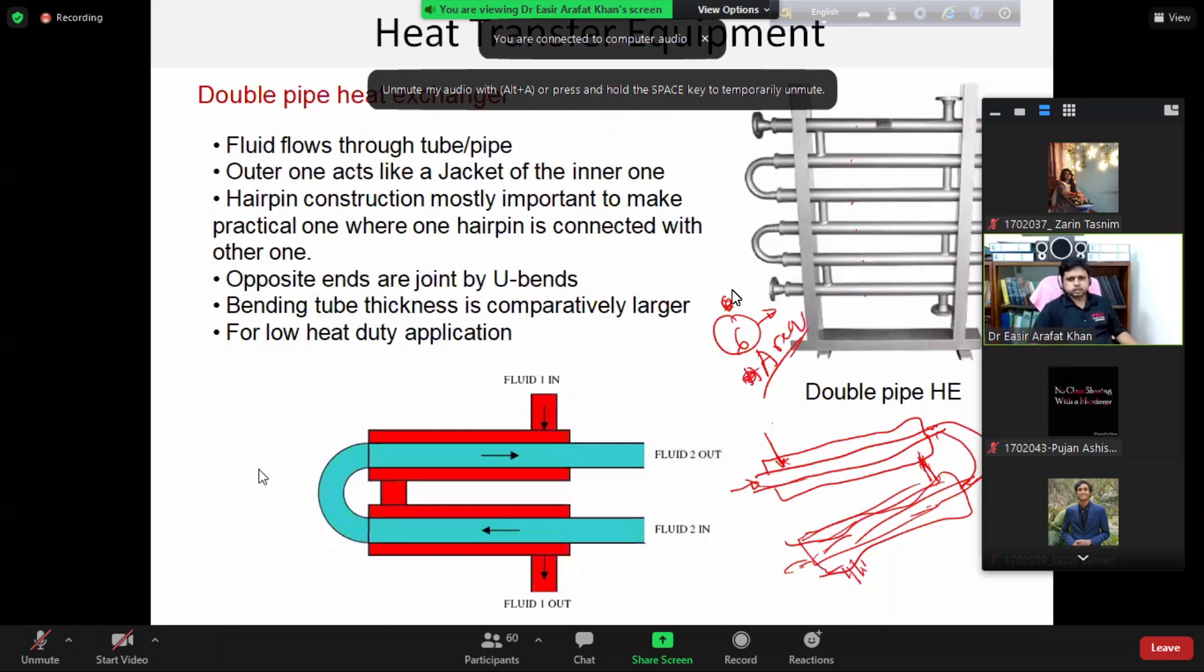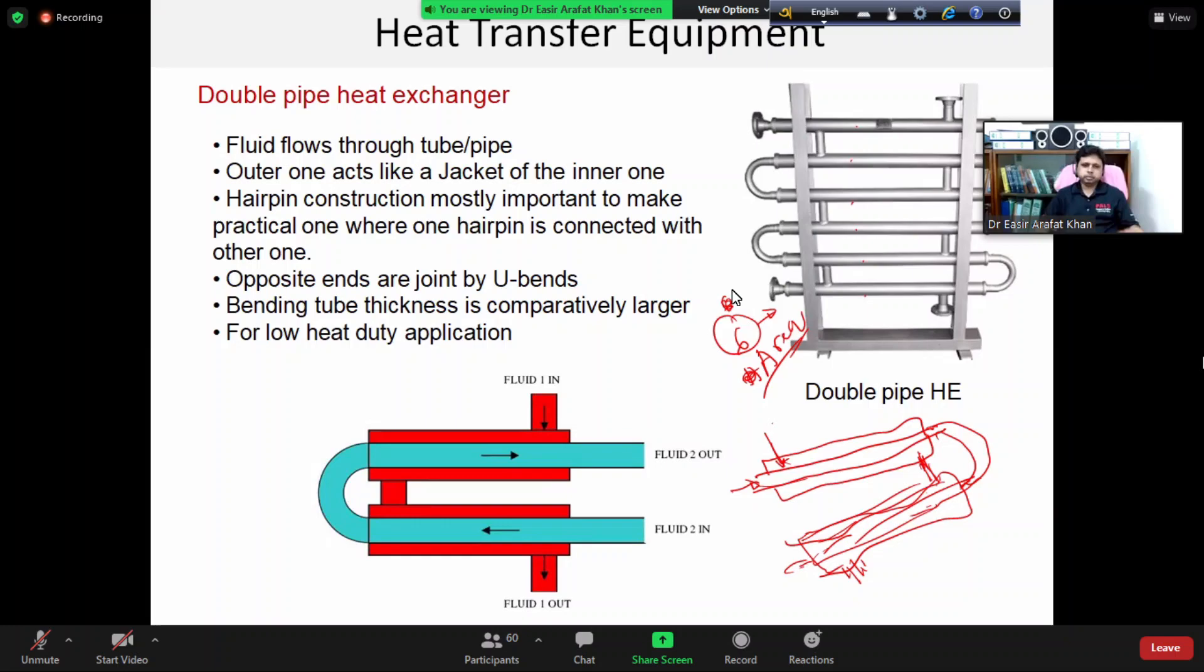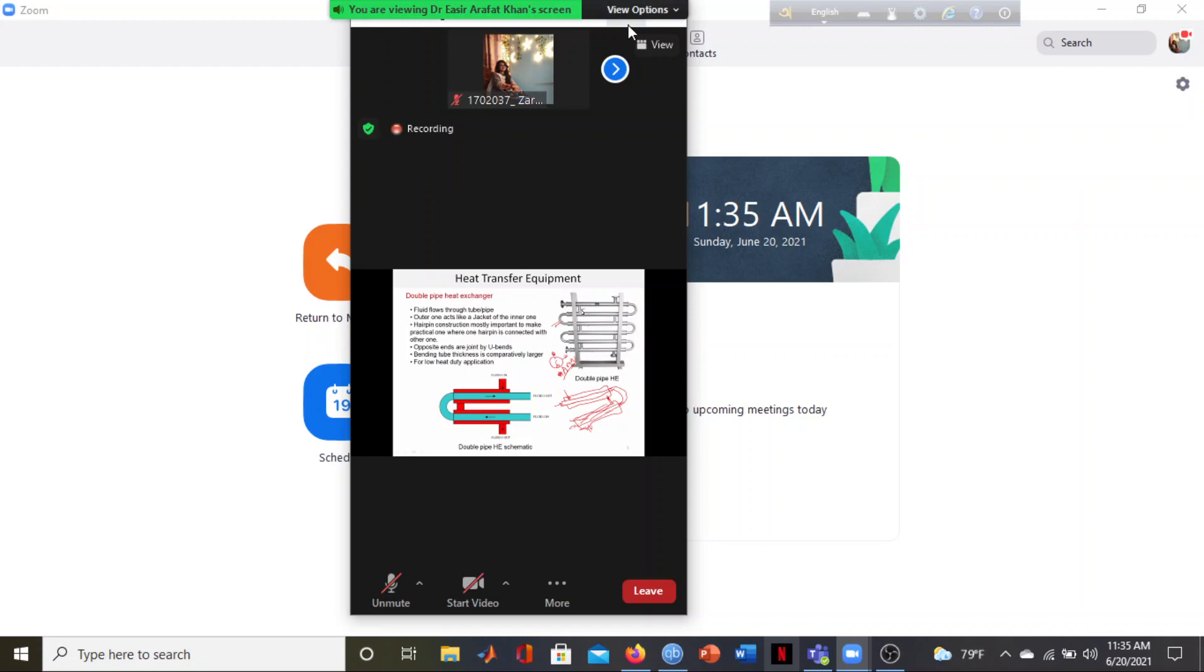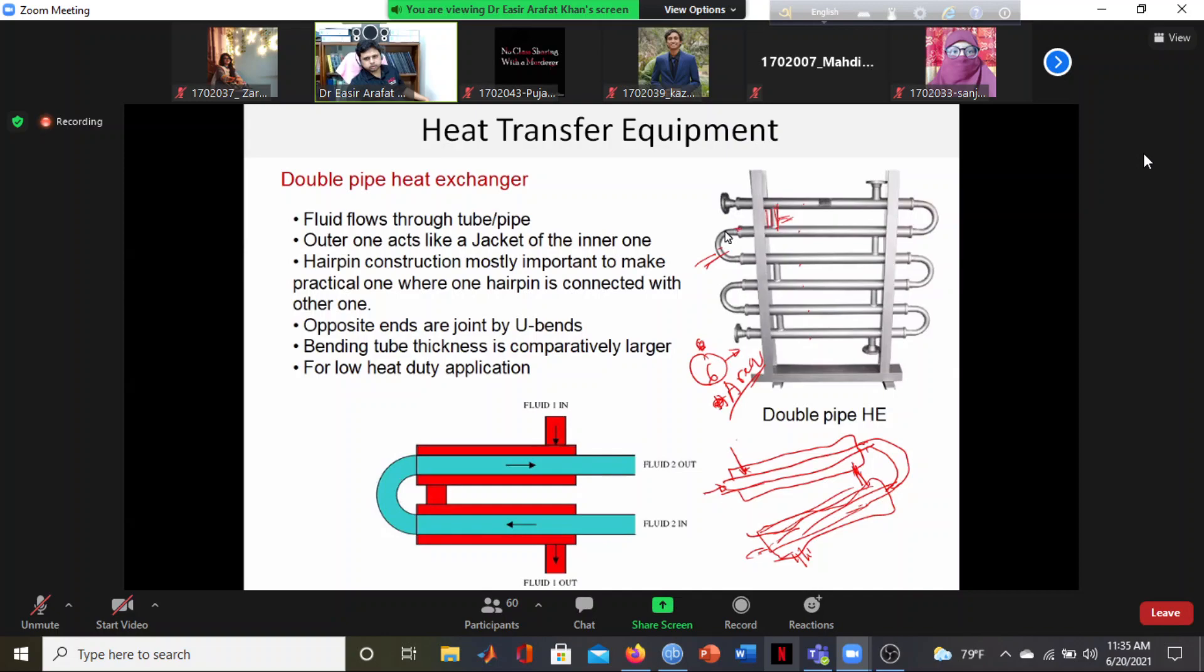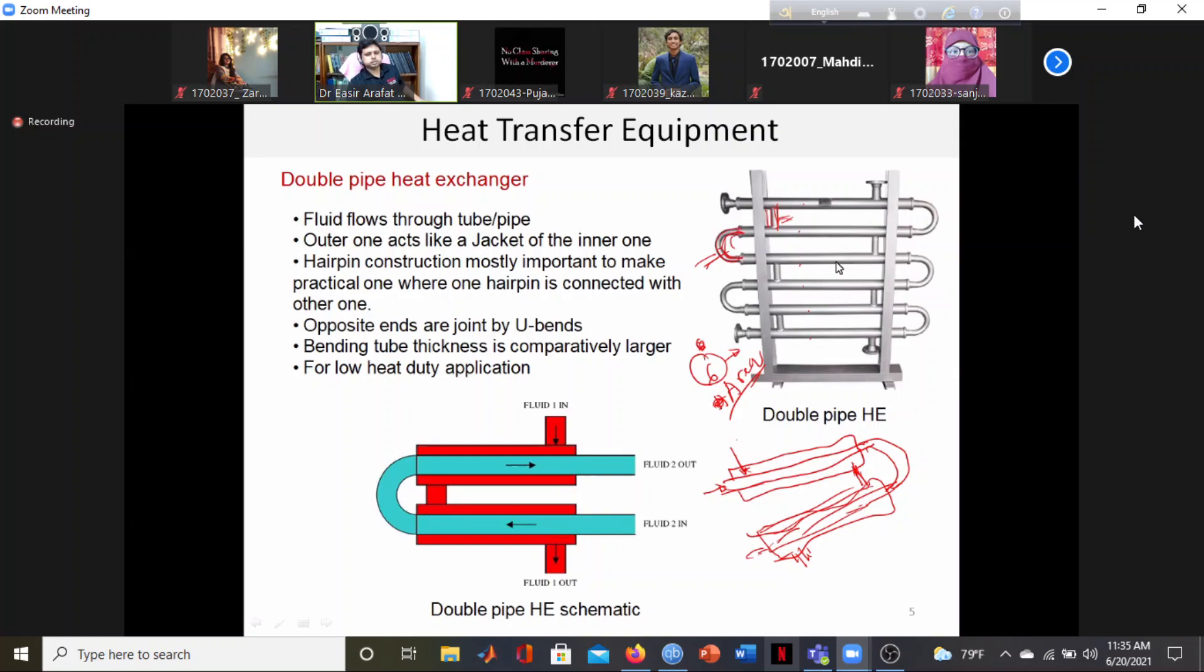Double pipe heat exchanger configuration. I connect the number of double pipe heat exchangers using this U-band. This is the shell. I connect with the U-band, and I have to add the surface area. I connect with the heat exchanger, and I can easily access it.